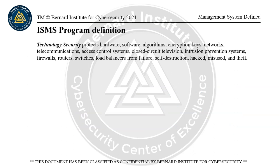Next up is technology security. Technology security is different than information security — with information security we're concerned with information, whereas technology security protects hardware, software, algorithms, encryption keys, networks, telecommunications, access control systems, closed circuit television, intrusion prevention systems, firewalls, routers, switches, and load balancers from failure, self-destruction, being hacked, misused, and theft. Most hackers go after hardware and software vulnerabilities in order to get to the information.